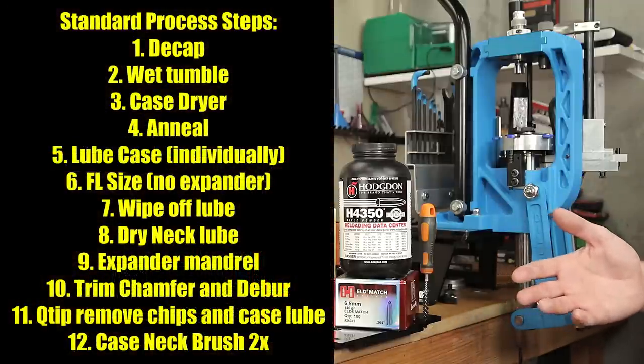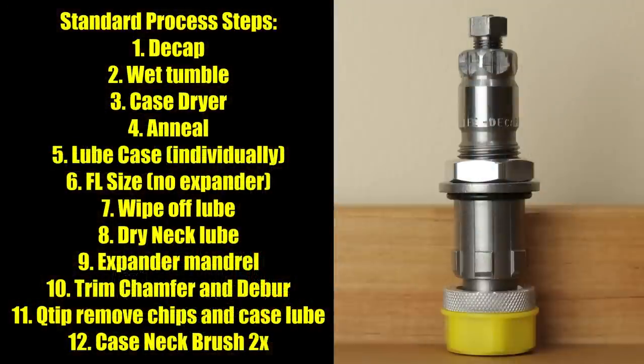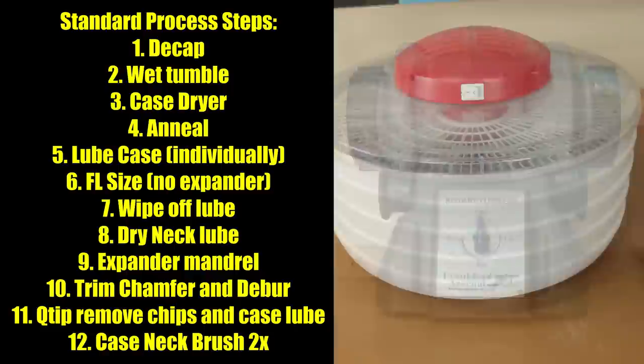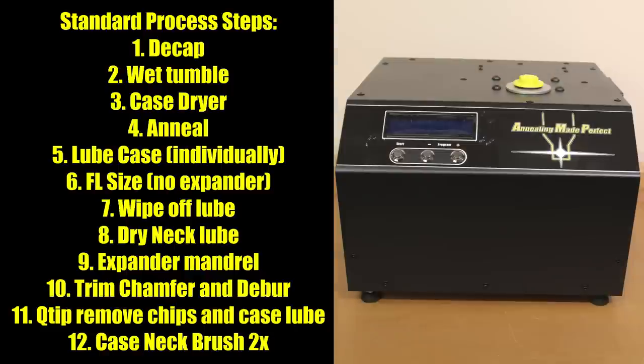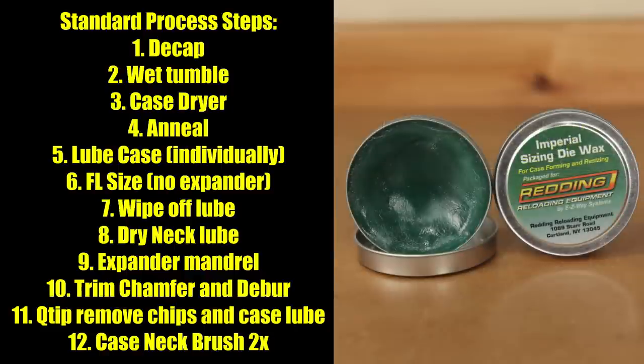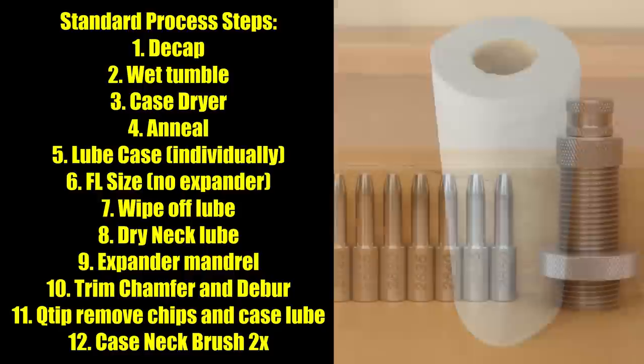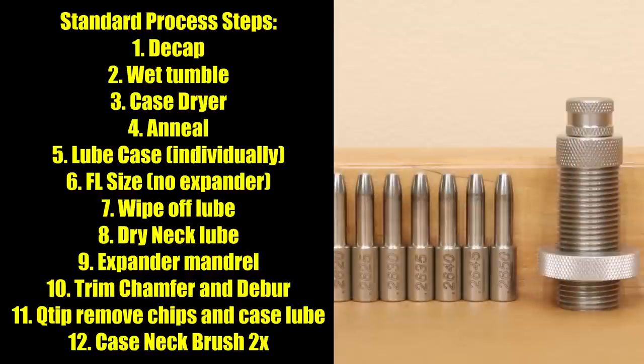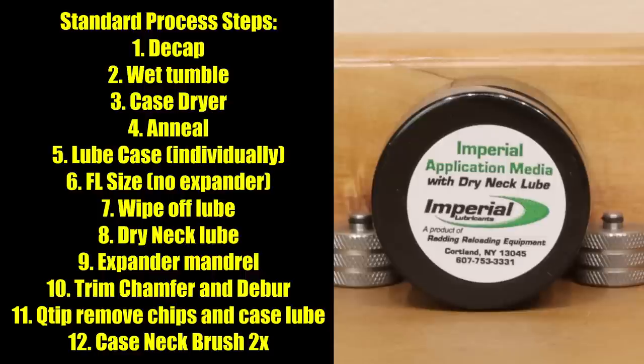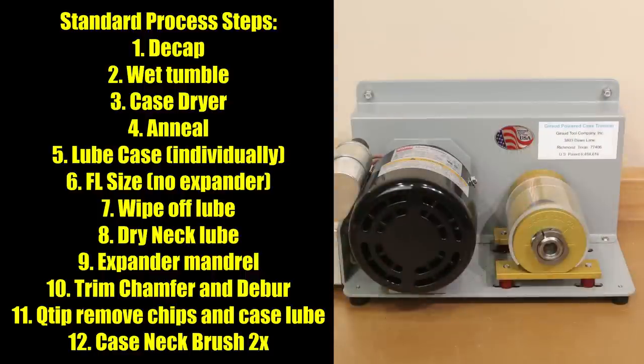Typically my brass processing involves decapping my brass, setting it through a wet tumbler, drying it off in a case dryer, annealing it, lubricating it with imperial sizing wax, full length sizing, removing the case sizing wax, opening up the neck with the expander mandrel that's been lubricated with dry neck lube, then trim to length, chamfer and deburr all in the same step.